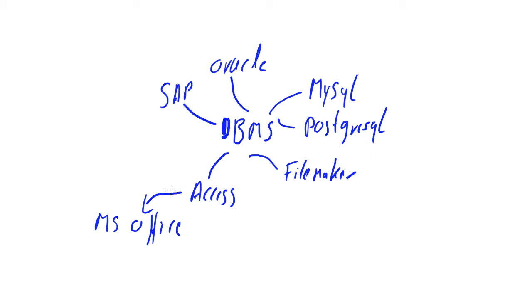What we're discussing in this series is Access, but the components and the way Access works are not only applicable to Access — they're also applicable to FileMaker, MySQL, and so on. If you understand Access, you don't only understand Access; you understand how databases in general function. It's pretty much like engines: if you know how a lawnmower engine works, you have a good understanding of how a car engine or a truck engine works. Principally they're all similar, just one is bigger than the other — and it's the same thing with databases.